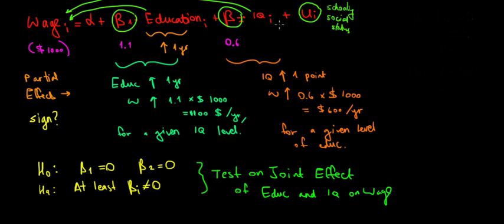Recall that we will have variation in wages for a given education level and IQ level, because there are specific factors we cannot include in the model — such as whether schooling was public or private, or the individual's social status. What we want to know is how much of the variation in wages we can explain by using education and IQ together in the model.